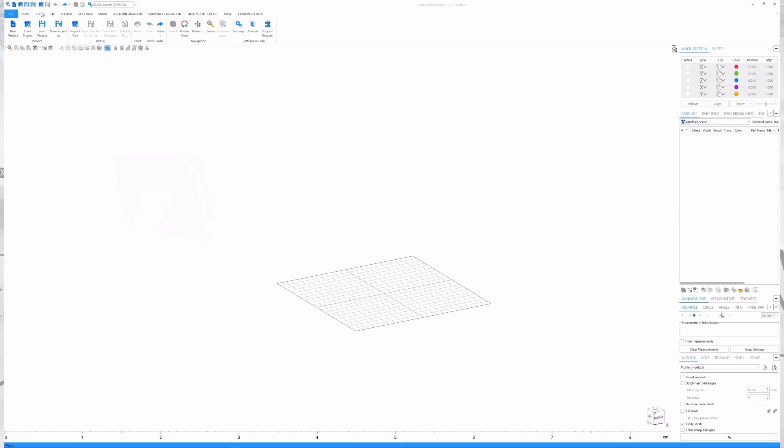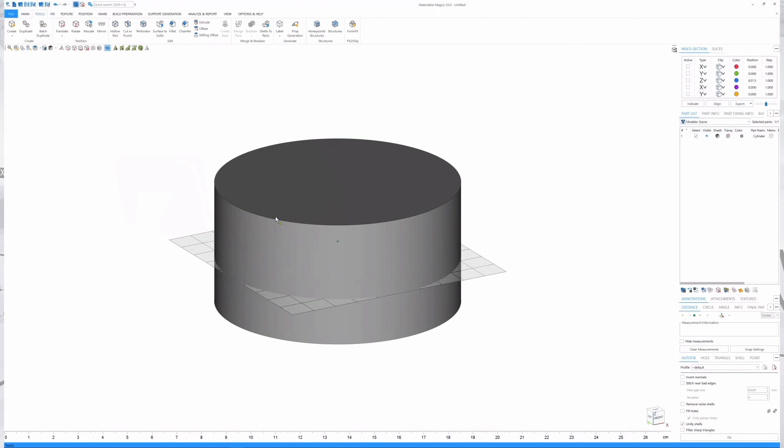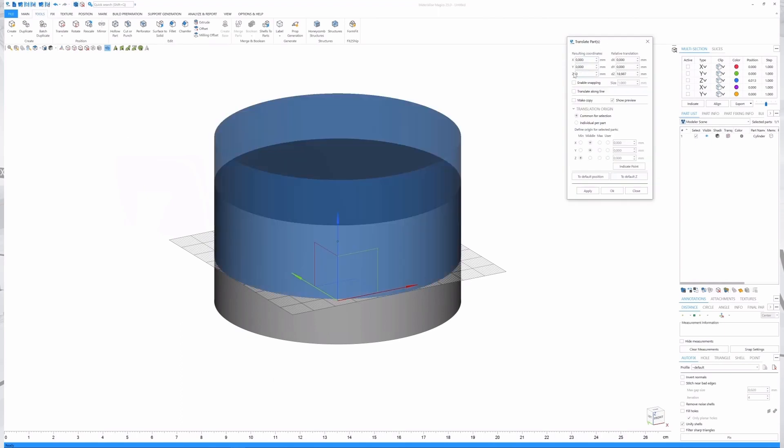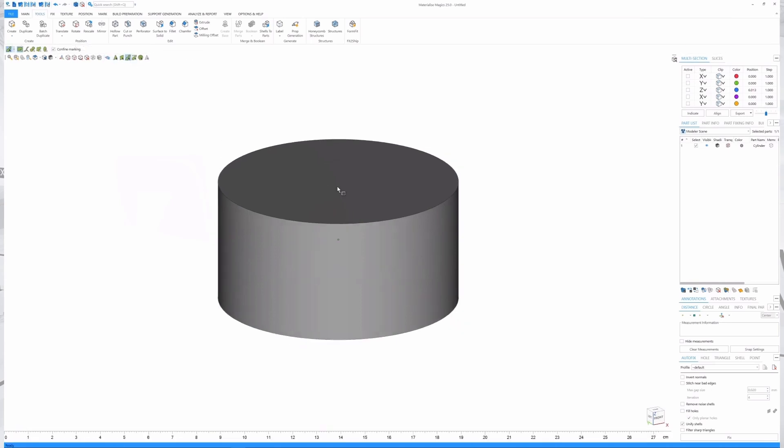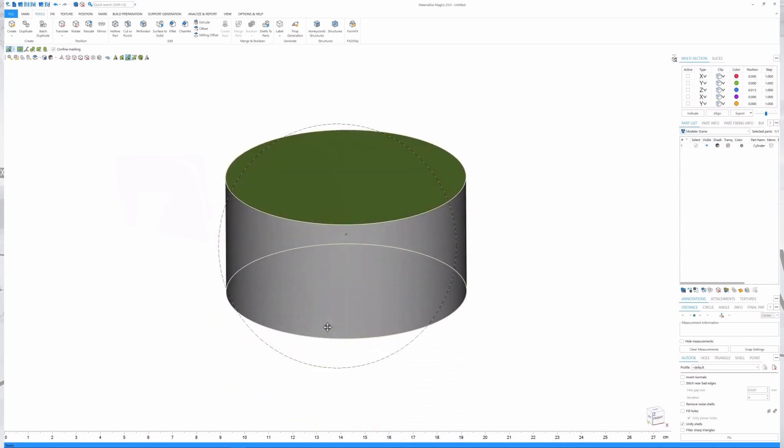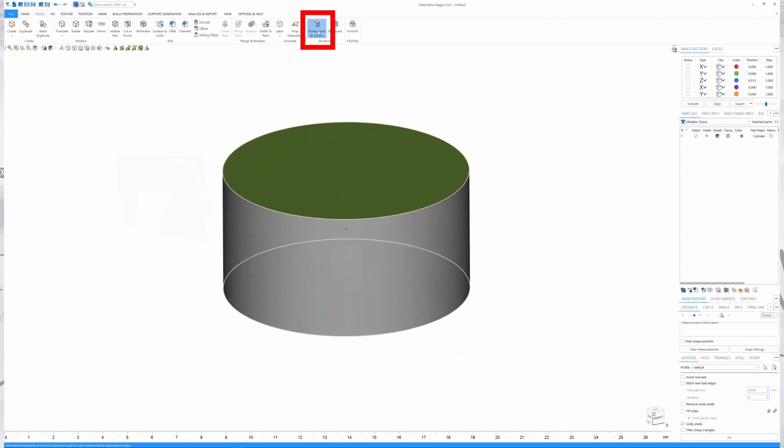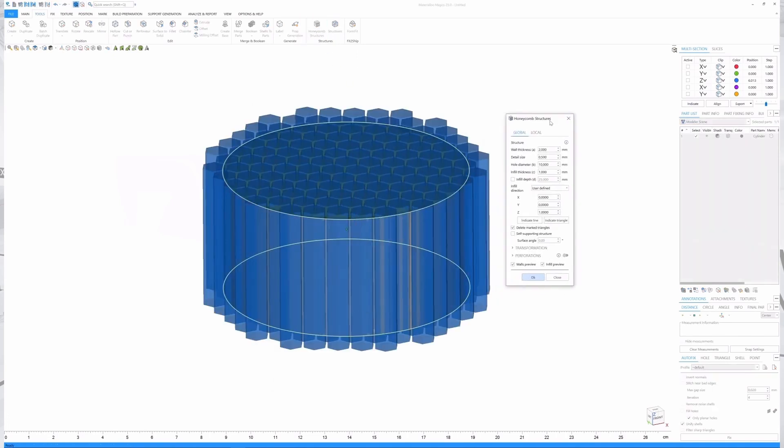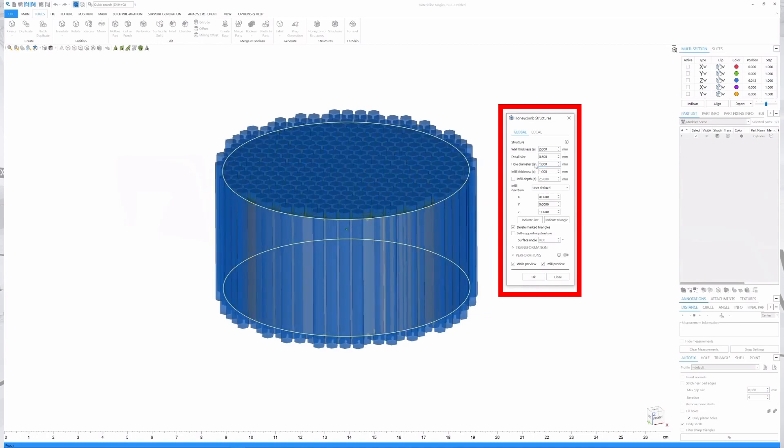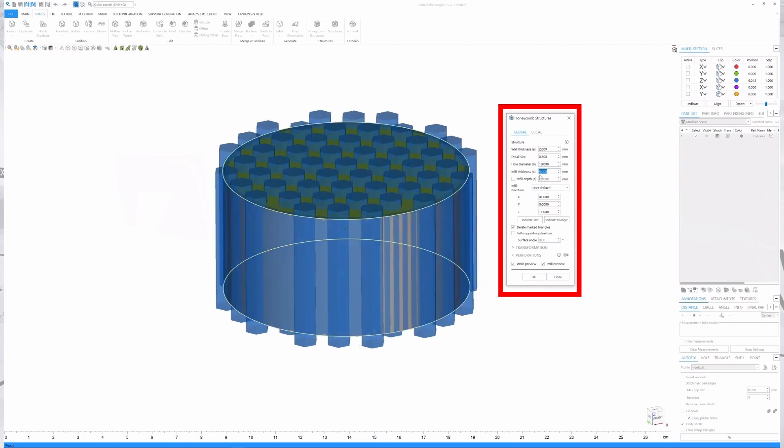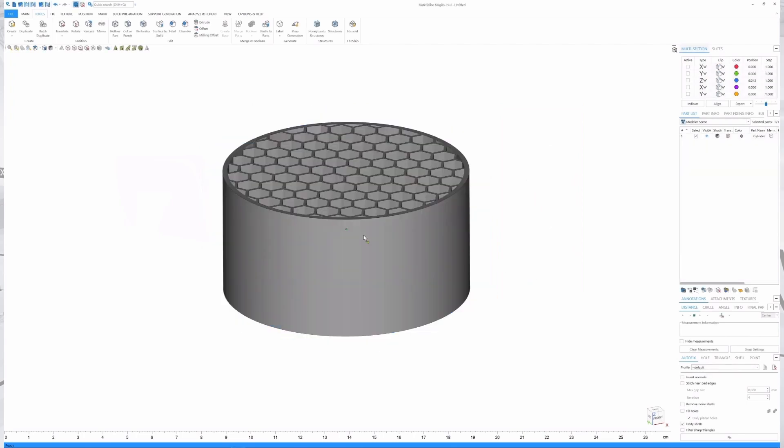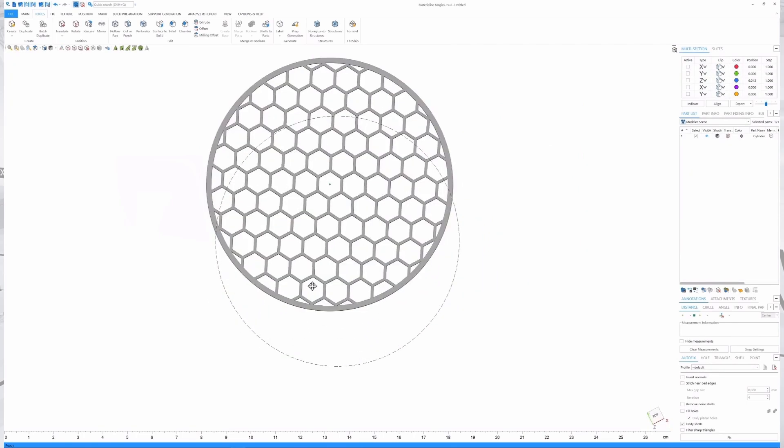A honeycomb structure can be applied quickly and easily to a wide range of parts in Magix from Materialize. Structures that are only to be applied to a certain depth are also possible. The following steps must be followed for this. First, select the two opposing surfaces to which the structure has to be applied. Next, in Tools, select the honeycomb function. Here you can configure the cells and adjust them as needed. Attention should be paid to the design guidelines for wall thicknesses and holes. Finally, it is advisable to check the part for possible errors and repair it if necessary.